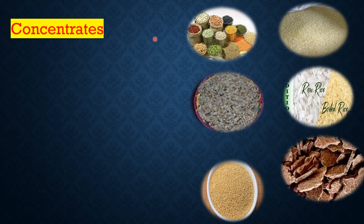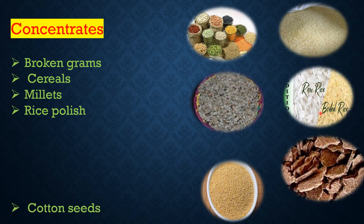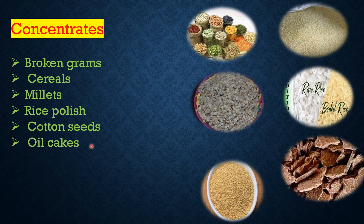Concentrates include broken grams, cereals, millards, rice polish, cotton seeds and oil cakes.